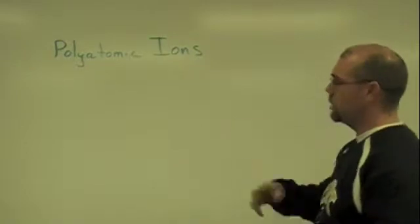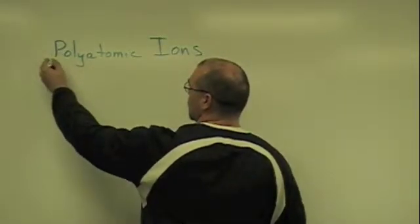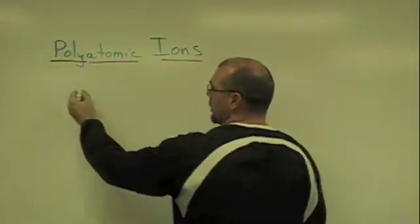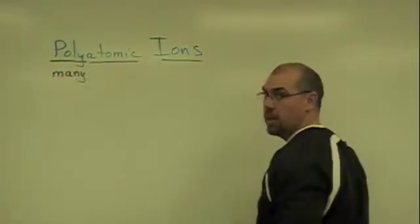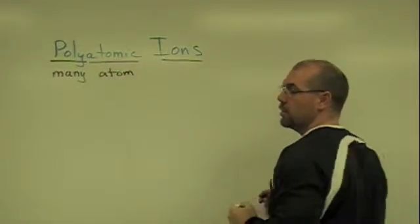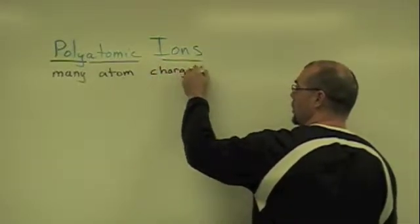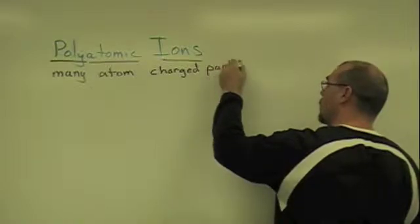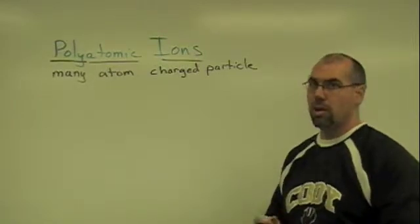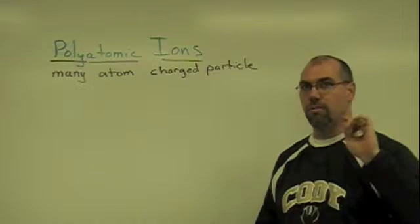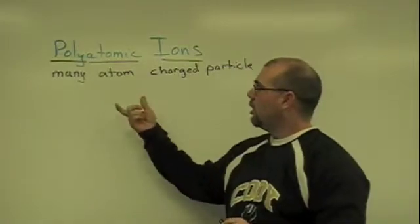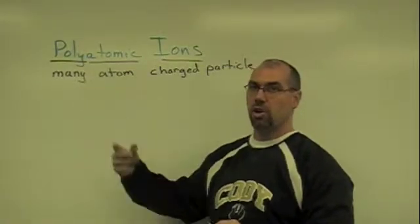First of all, we want to talk about what is a polyatomic ion. If you break down the term into its parts, poly is many, atomic is of atoms, and ion simply is a charged particle. So what we're looking at here is a many atom charged particle. We've dealt with ions in terms of metals or non-metals that have either lost or gained electrons to become charged particles. What we're going to see now are these things that are made up of more than one atom that are charged particles.